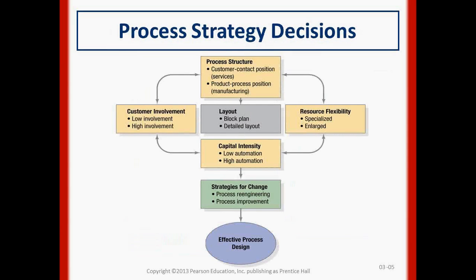When talking about process strategy decisions, we focus on process structure: how much contact you have with the customer — high or low. A Subway restaurant is an example of high customer contact, while Hyundai manufacturing vehicles is a low-contact example. Depending on the level of contact and the flexibility needed in production, that determines your capital intensity.